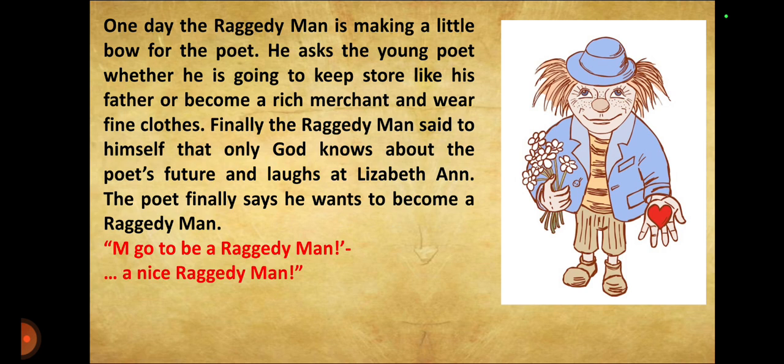One day the Raggedy man is making a little bow for the poet. At that time he asks, 'What do you want to become? Do you want to become like your father as a storekeeper, or do you want to become a merchant?' Then finally he says to himself, only God knows what he is going to become. The poet finally says he doesn't want to be like anything — he only wants to be a Raggedy man.